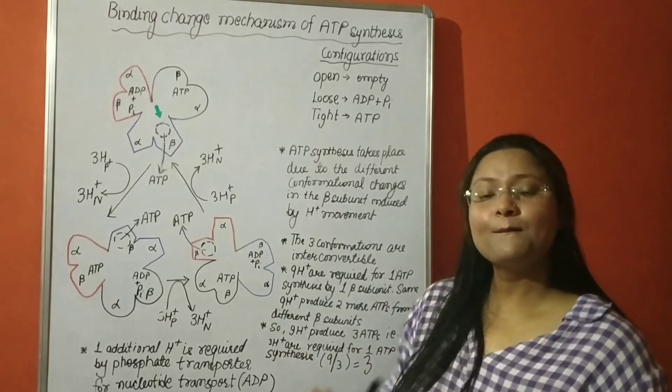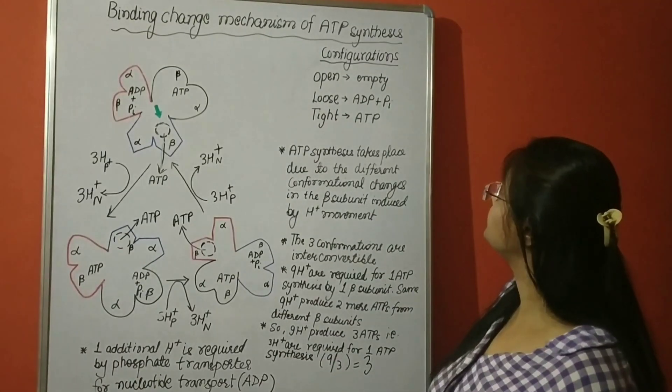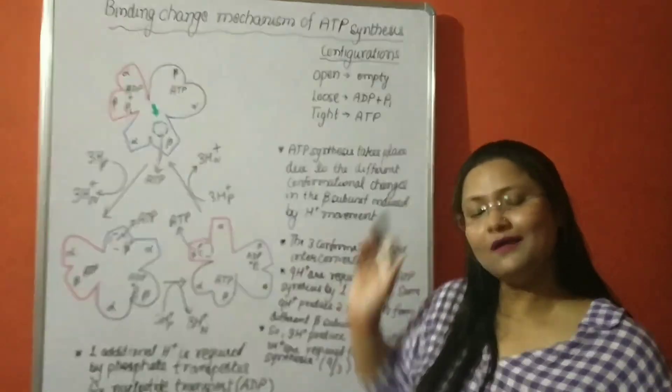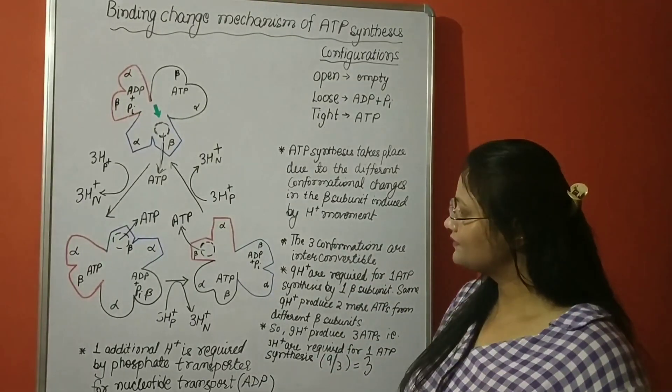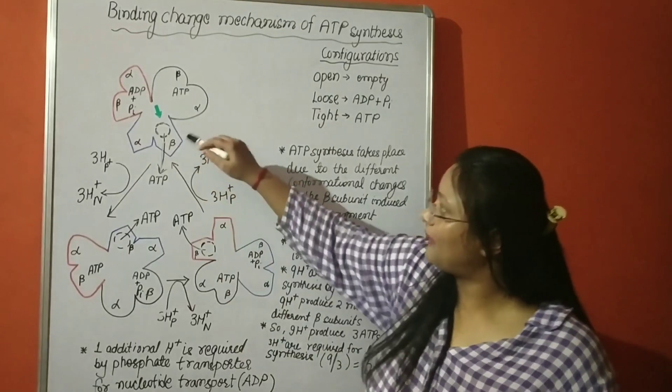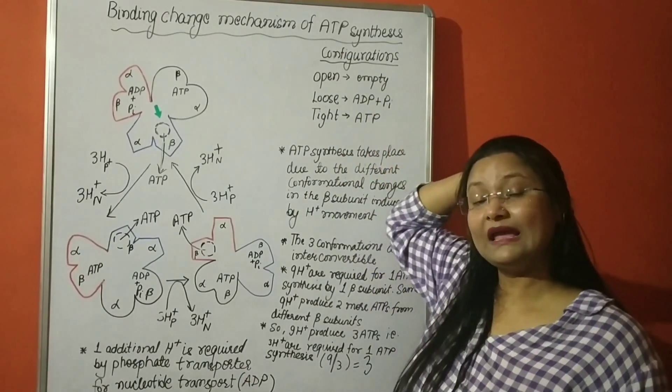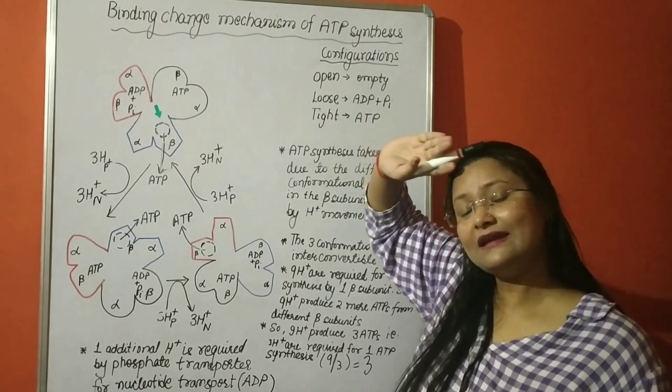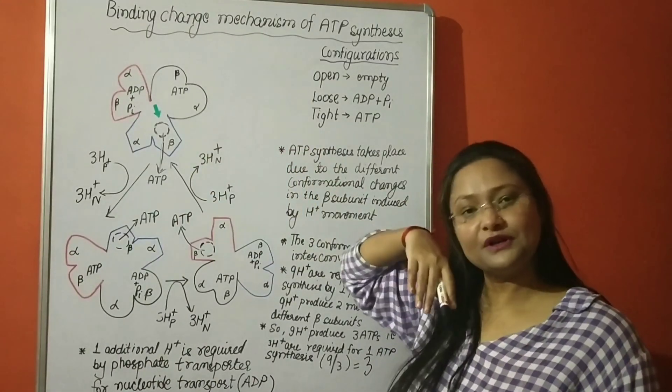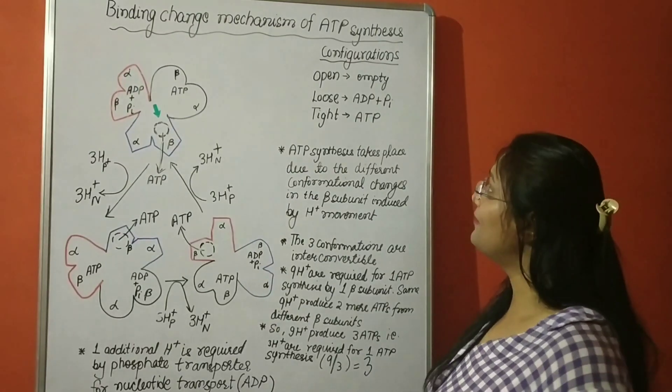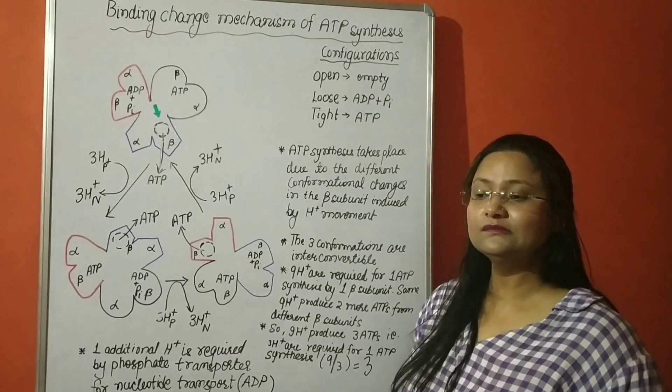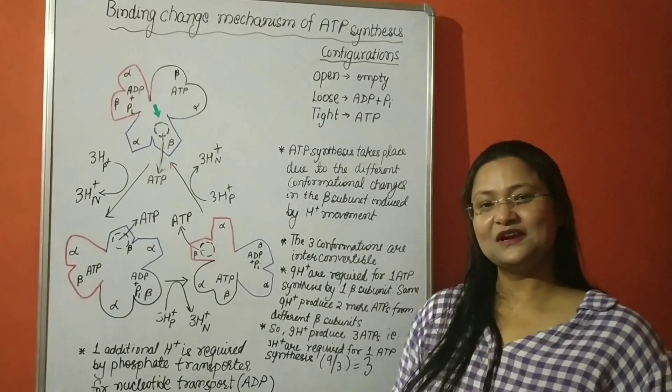That's how ATPs are produced with the help of ATP synthase. And the model is known as binding change mechanism or binding change model. So I hope it is clear how exactly by the rotation produced by H+ movement and subsequently by torque, how exactly the three conformations are changing to produce ATPs. That's all about how exactly ATPs are being produced in the mitochondria with the help of complex 5, which is ATP synthase.